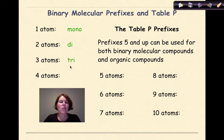For 2, we're going to use DI, 3 is tri, and 4 is tetra. Once you get to 5, you can use table P to guide you, and so you don't have to memorize these, because we can use from 5 and up.